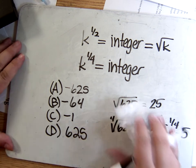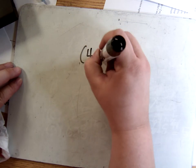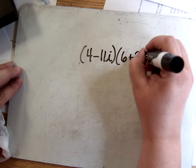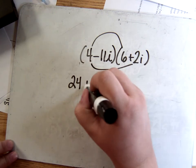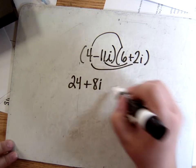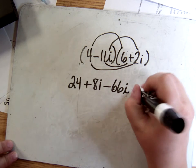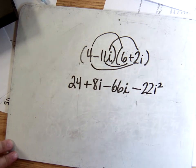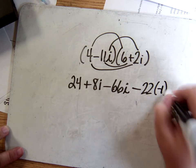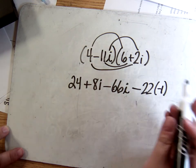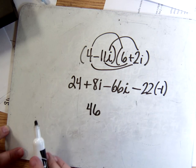The next problem: what is the product of (4 − 11i) and (6 + 2i)? Using FOIL: 4 times 6 is 24, 4 times 2i is 8i, −11i times 6 is −66i, and −11i times 2i is −22i squared. Remember, i squared always turns into −1. So −22 times −1 is +22. Combining: 24 + 22 = 46, and 8i − 66i = −58i. The answer is 46 − 58i.